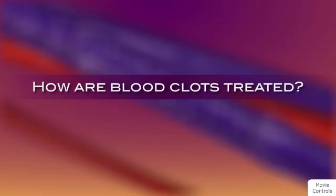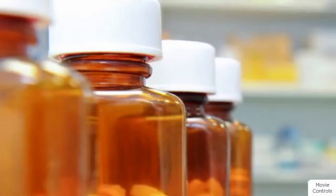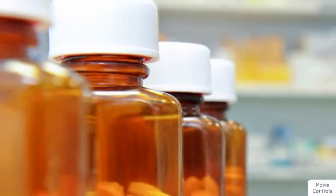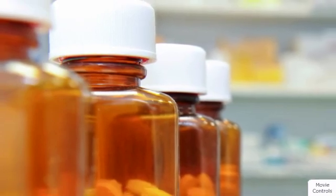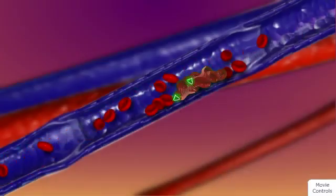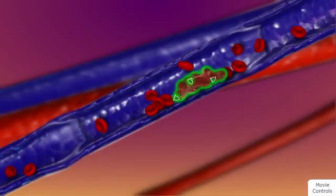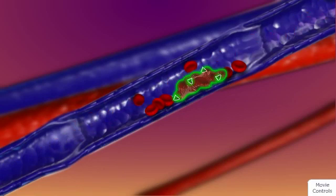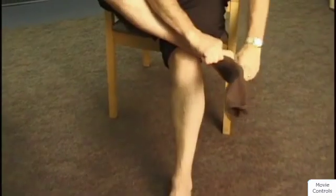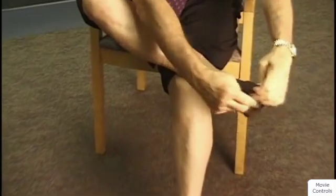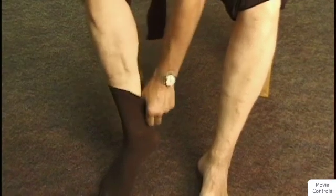How are blood clots treated? Both DVT and PE are treated with anticoagulants, which are sometimes called blood thinners. Anticoagulants decrease the blood's ability to clot to a controlled degree. While the body dissolves the clot, anticoagulants stop clots from getting bigger and prevent new clots from forming. Compression stockings may be prescribed to reduce the long-term pain and swelling that may result from vein valve damage or remaining clot or scar tissue.